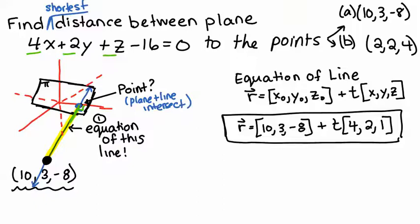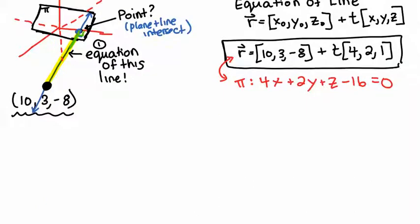Now we need to know where does this line intersect the plane 4x plus 2y plus z minus 16 equals 0? So where did these two things intersect? It will be right at that point that we want to find. The easiest way to do that is to put our line in parametric form.